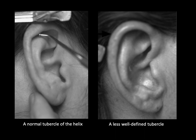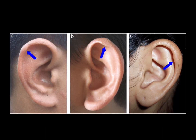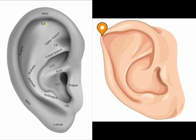Many patients have very subtle and undefined tubercles, so we must infer where it would be. To do this, divide the length of the ear into thirds — the tubercle is roughly at the junction of the upper third and the lower two-thirds of the helix. The scaphoid fossa is a depression between the helix and antihelix, sometimes called the scapha.